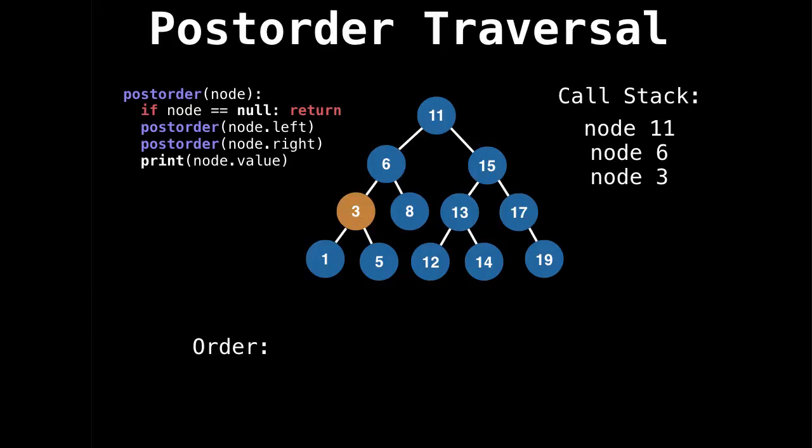So go all the way down, then print one because we've explored both its left and right subtree. Now don't print three because we haven't explored its right subtree yet. Print five because we've explored both the subtrees, which don't exist. Now we can print three because we've explored both of its subtrees. And then similarly, go down to eight, print eight, recurse and print six.